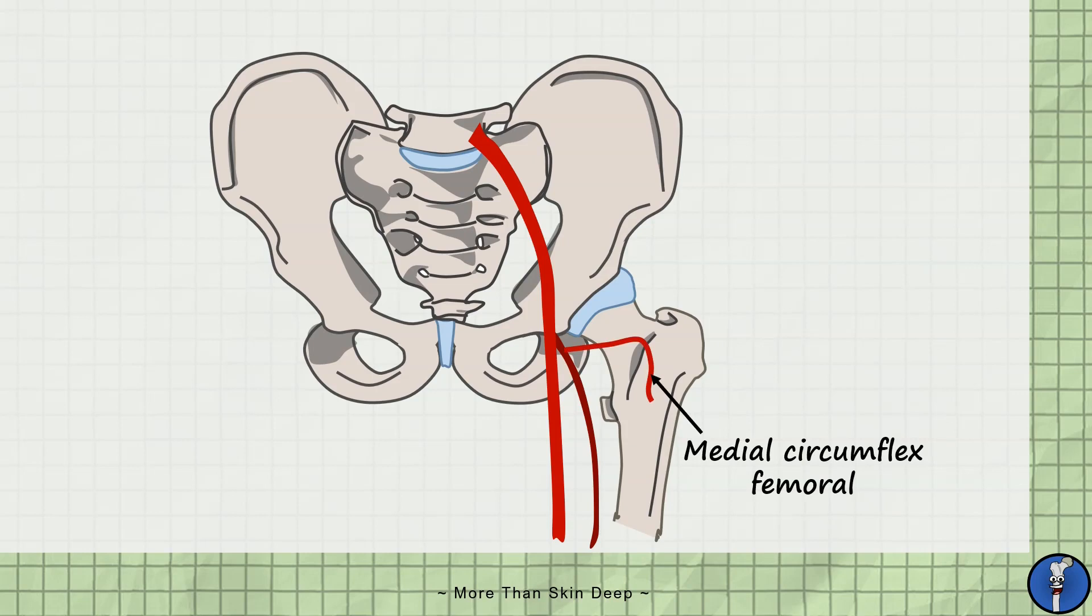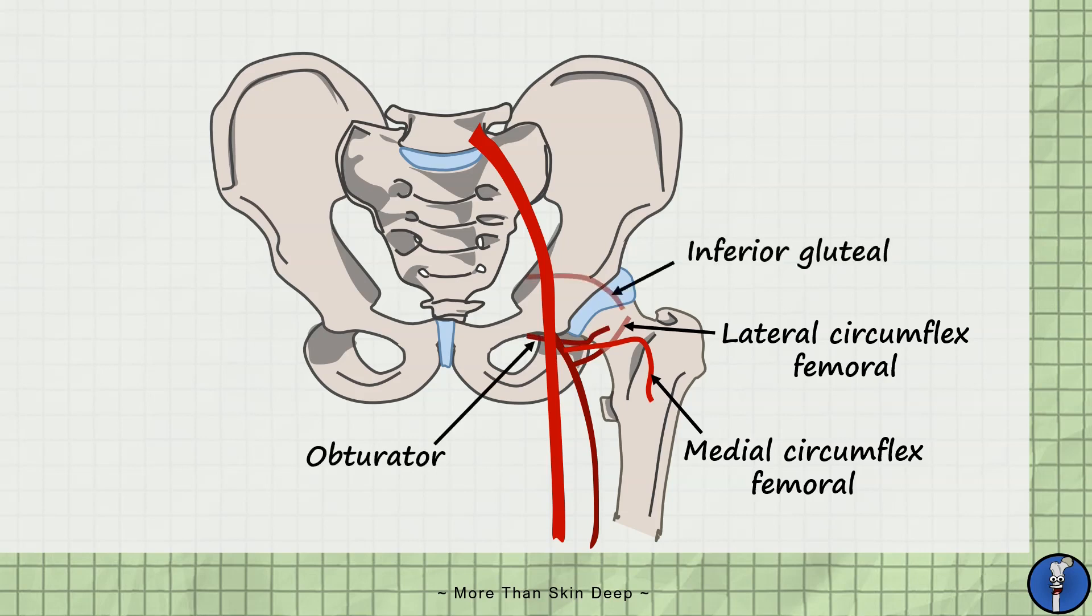The deep femoral artery also produces the lateral circumflex femoral artery, which supplies part of the posterior hip. Additional blood supply comes from the obturator artery and the inferior and superior gluteal arteries, which all come from the pelvis.